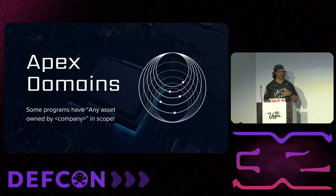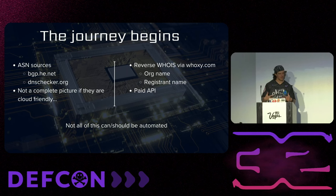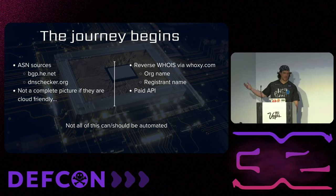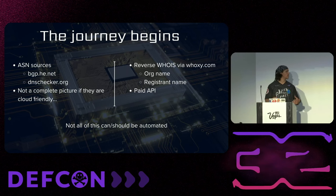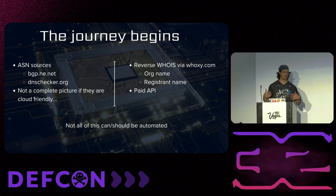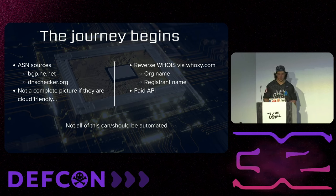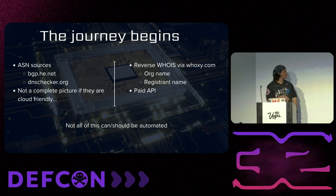Starting with Apex domains — they're very important in bug bounty, especially for automationists. Seeing a wildcard like star.anything.com means we can hunt on everything. Some programs say hunt all of their stuff no matter what — anything that Meta owns, anything that Yahoo owns. For those programs, the place to start is Apex domains: finding all the root domains, all the IP space they own.